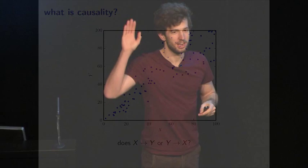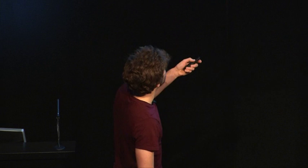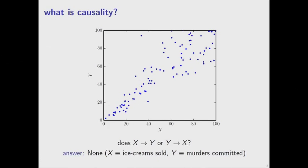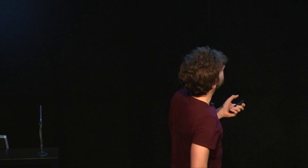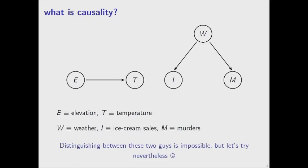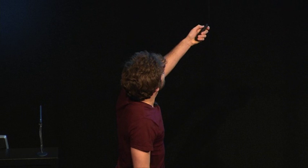For the second example, the more popular choice is y causes x, but the answer is none. X is the number of ice creams sold in the U.S., and y is the number of murders committed. In the scatter plot, you can see some dependence patterns, but if you make humanity consume more ice cream, you do not expect people to kill each other more or less. The dependence is generated by a common cause — the weather. When the weather is nicer, people eat more ice cream, get together more in the streets, and things escalate.